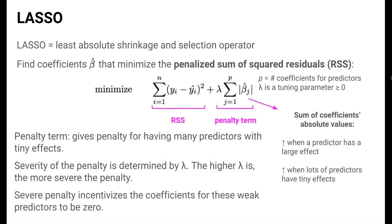The penalty term gives us a penalty for having many predictors with tiny effects. The severity of this penalty is determined by the lambda parameter. The higher lambda is, the more severe the penalty, and severe penalties incentivize coefficients for those weak predictors to be zero. Why? If those coefficients are zero, the sum of their absolute values is zero, and mathematically, no penalty is incurred.